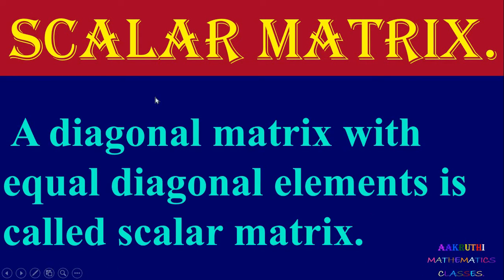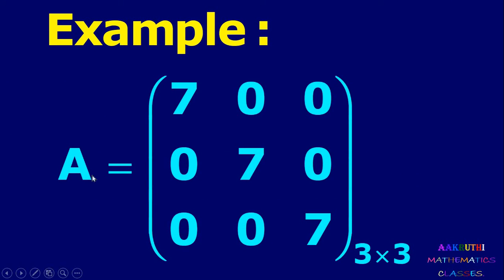Next type is scalar matrix. A diagonal matrix with all equal diagonal elements is called a scalar matrix. It must be a square matrix where all diagonal elements are the same and all non-diagonal elements are zero. For example, A equal to [7, 0, 0; 0, 7, 0; 0, 0, 7] is a scalar matrix.